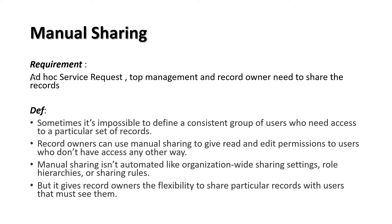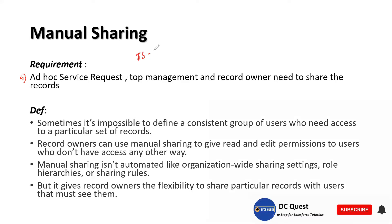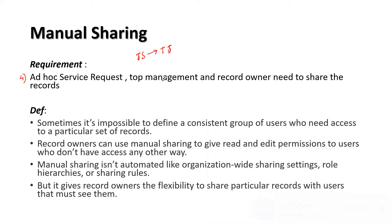Now we have the last but not the least on the admin side configuration of our record-level security, which is manual sharing. The fourth requirement is that ABC Company might have some ad hoc requests where they have to enable access for different users — for example, technician Sam has to share a record with technician Jack, or top management wants to give access to one record to multiple people. Additionally, ABC Company requires that these requests should not always go to an admin; the users who have that record access should be able to do it themselves.